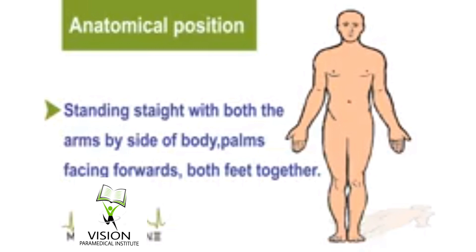Next, we are going to see different positions of the body. The first one is anatomical position. When a person is standing straight, looking forwards, both arms by the side of the body, palms facing forwards, and both feet together, the position is called anatomical position. In the image, we can clearly see the position.